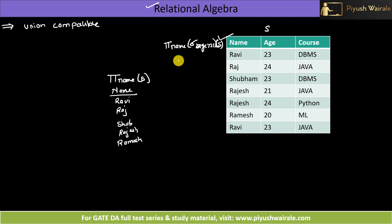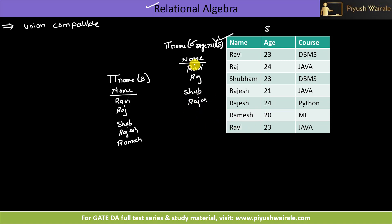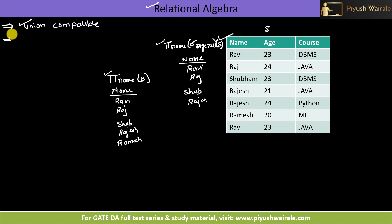Now if I write one more expression: pi name with condition H greater than 21 from S — what will be the output? H greater than 21: Ravi will be there, Raj will be there, Shubham will be there, Rajesh — one of them will be there, but Ramesh no. This is the output of this relational algebra expression.